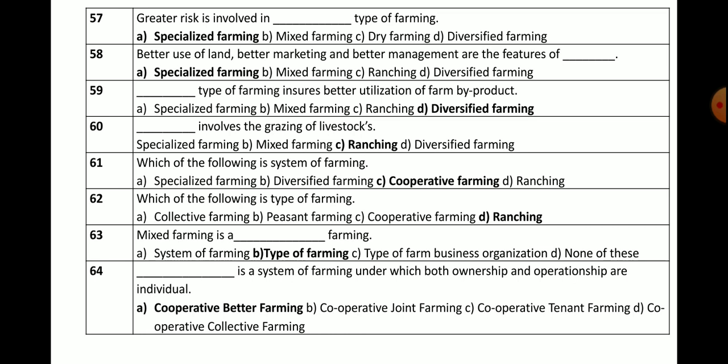Question number 61: Which of the following is a system of farming? Options: specialized farming, diversified farming, cooperative farming, or ranching. The correct answer is cooperative farming — cooperative farming is a system of farming.